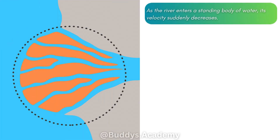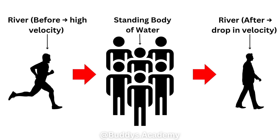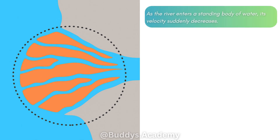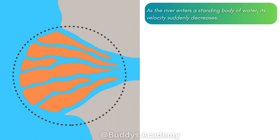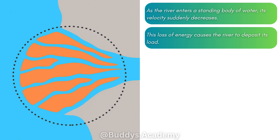So how does a delta actually form? As the river enters a standing body of water, its velocity suddenly decreases. Think of it like running towards a group of people standing still — once you reach them, you have to slow down to move through. That is exactly what happens to a river: once it enters the standing body of water, which is not really moving, it slows down very quickly. Its velocity suddenly decreases, and this loss of energy causes the river to deposit its load.